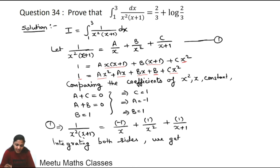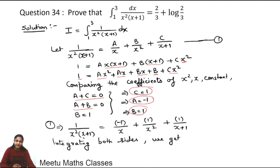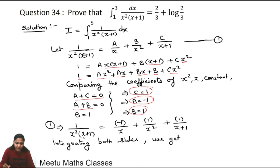Solving: B = 1, so A = −1, and C = 1. Substituting back: 1/(x²(x+1)) = −1/x + 1/x² + 1/(x+1). Now we integrate both sides with limits 1 to 3.